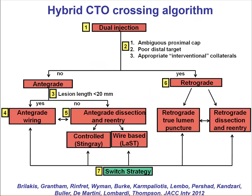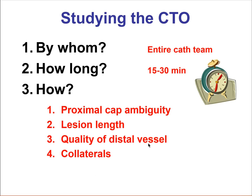The hybrid algorithm forms the basis of how we currently perform CTO intervention, and there are four components of the angiogram that are important: first is the proximal cap, second the distal target, third the occlusion length, and finally the presence of interventional collaterals. We look at them by reviewing the angiogram as a team — everyone including techs and fellows — and often it takes 15 to 30 minutes of detailed frame-by-frame review to completely understand how the anatomy looks.